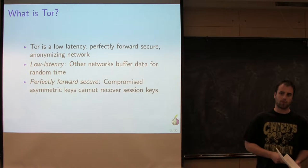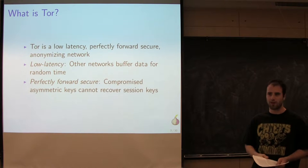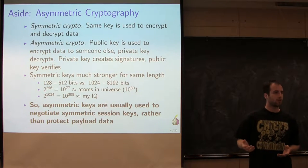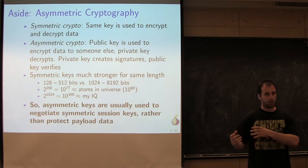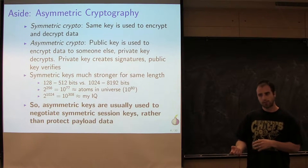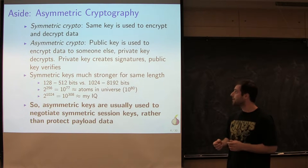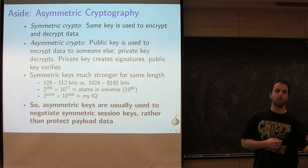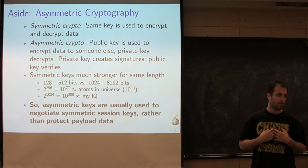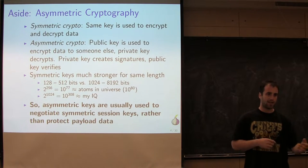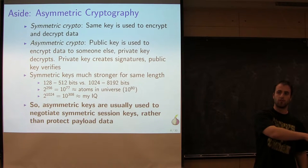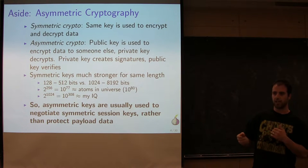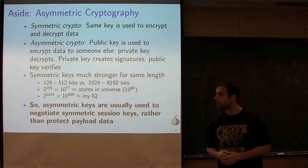In asymmetric cryptography, you have a public key and a private key. You hold onto your own private key — nobody can see it — and other people use your public key. If I want to send something to Andy, I take Andy's public key, encrypt the data with that, and then he decrypts it with his private key. What asymmetric cryptography gets you is that you never actually have to exchange private passwords or anything.